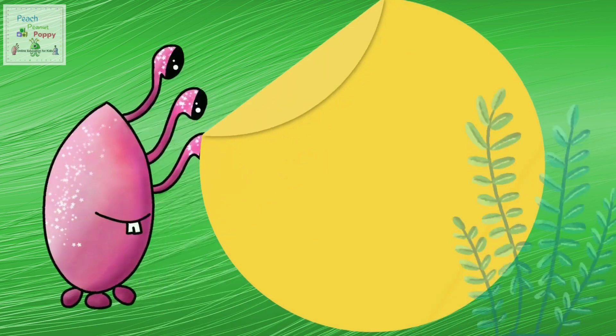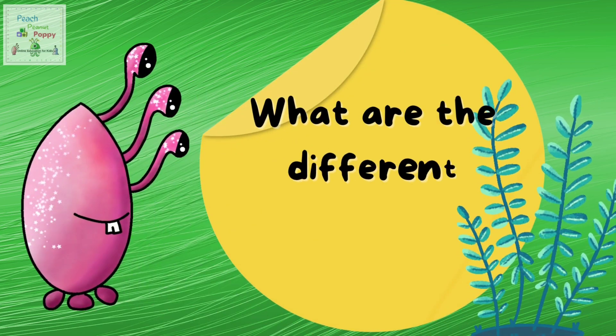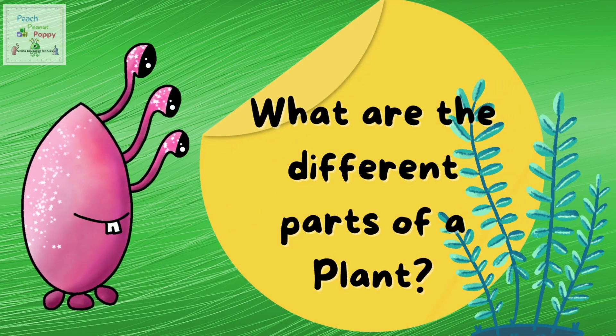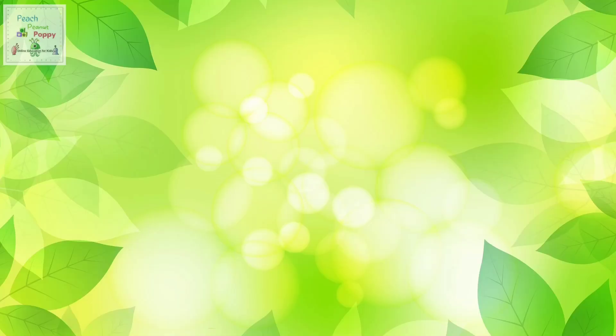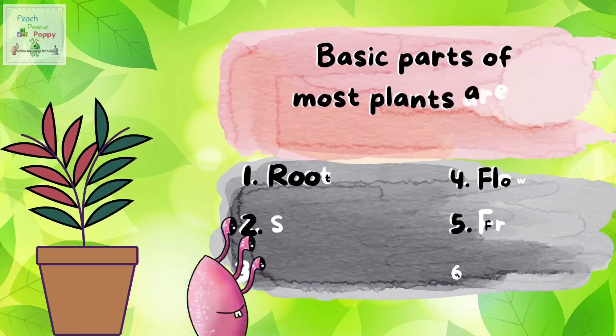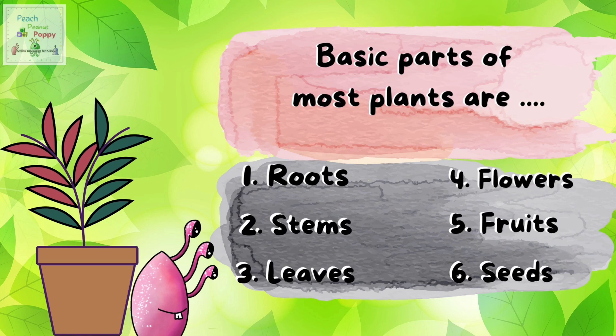Now let's have a look at what are the different parts of a plant. The basic parts of most plants are: 1. Roots, 2. Stems, 3. Leaves, 4. Flowers, 5. Fruits, 6. Seeds.